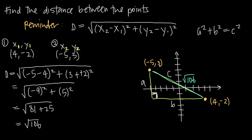If we want to find the length of side a, we take 3 and subtract negative 2, because this side starts at y equals 3 and ends at y equals negative 2. So the length of a is 3 minus negative 2, which equals 5. This makes sense: the distance from the x-axis to the upper point is 3, and the distance from the x-axis to the lower point is 2, and 3 plus 2 gives us 5.